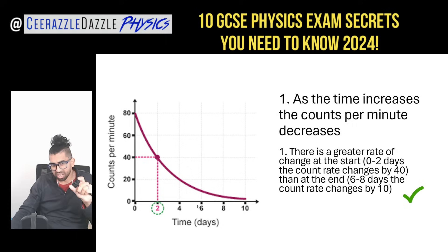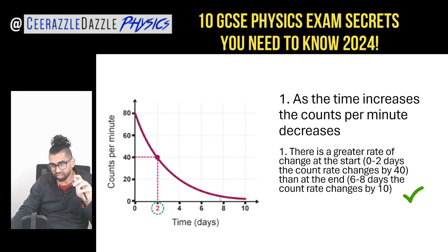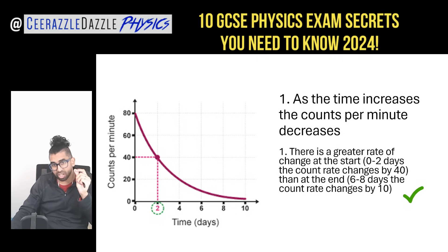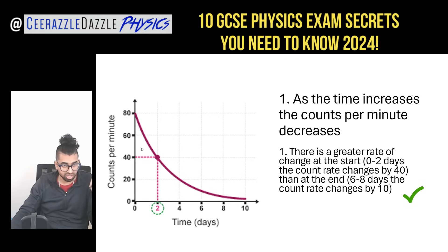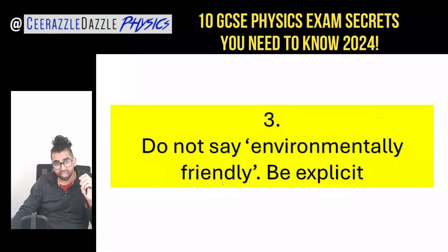Looking between 0 and 2 days at the start, the count rate changes by 40. Later, between 6 and 8 days — still an interval of 2 — it changes way less, from about 10 to 4 or 5. For the second mark, you must state that there is a greater rate of change at the start compared to the end, and explain how it varies.